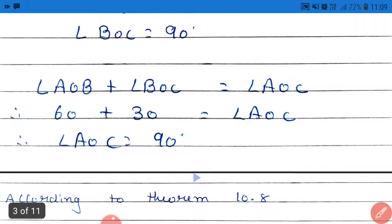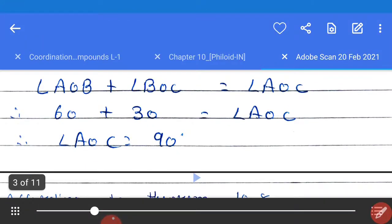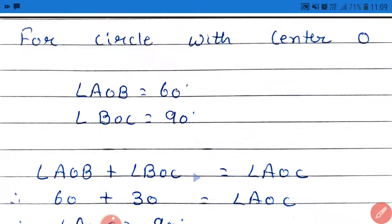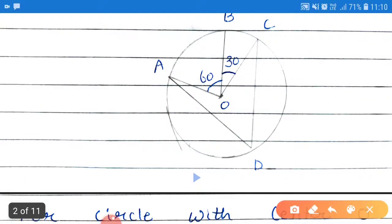Now, the same thing I have written over here. Agar hum angle AOB aur angle BOC ko plus kare, to humay milega angle AOC. AOB is 60, BOC is 30. Yahaan pe 90 hai, usko 30 kar dena hai. So, that will give you angle AOC. Now, 60 plus 30, that will be equal to 90. So, angle AOC is equal to 90. So, this angle is of 90 degrees.